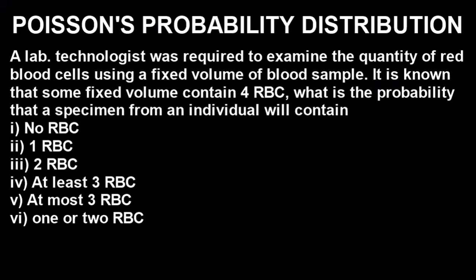Let's look at the question. A lab technologist was required to examine the quantity of red blood cells using a fixed volume of blood sample. It is known that some fixed volume contains four red blood cells. What is the probability that a specimen from an individual will contain: (i) no red blood cell, (ii) one red blood cell, (iii) two red blood cells, (iv) at least three red blood cells, (v) at most three red blood cells, and (vi) one or two red blood cells.